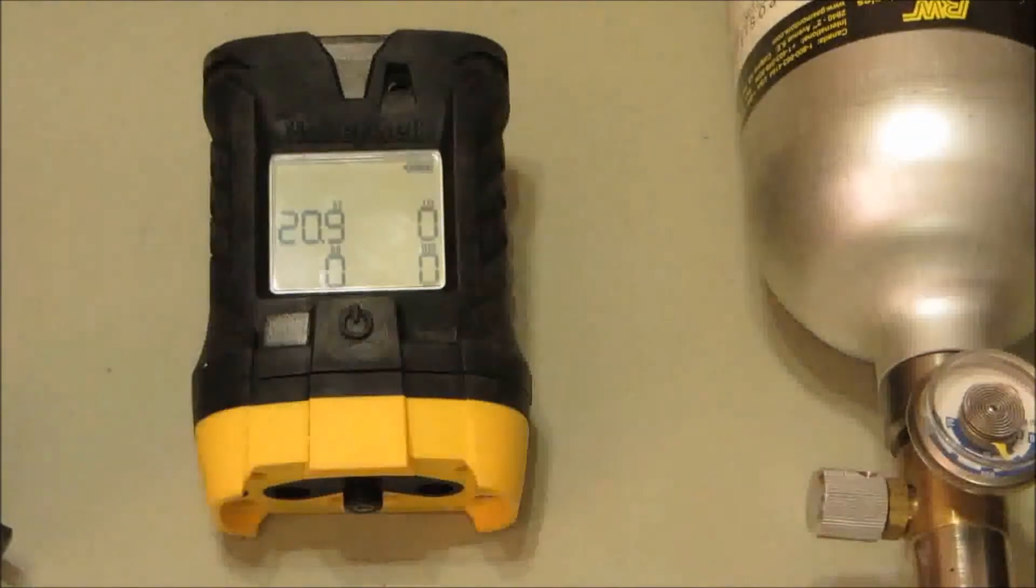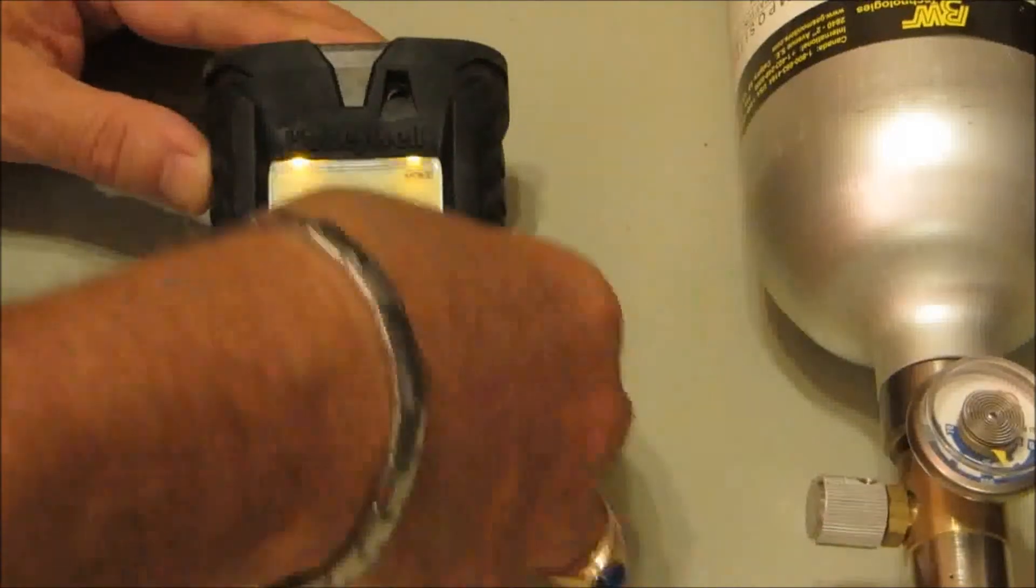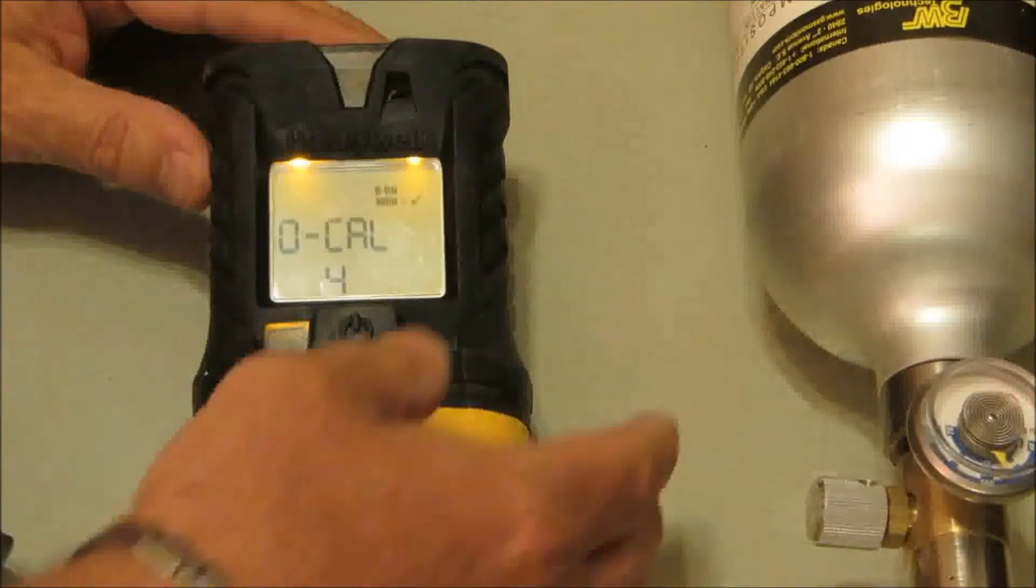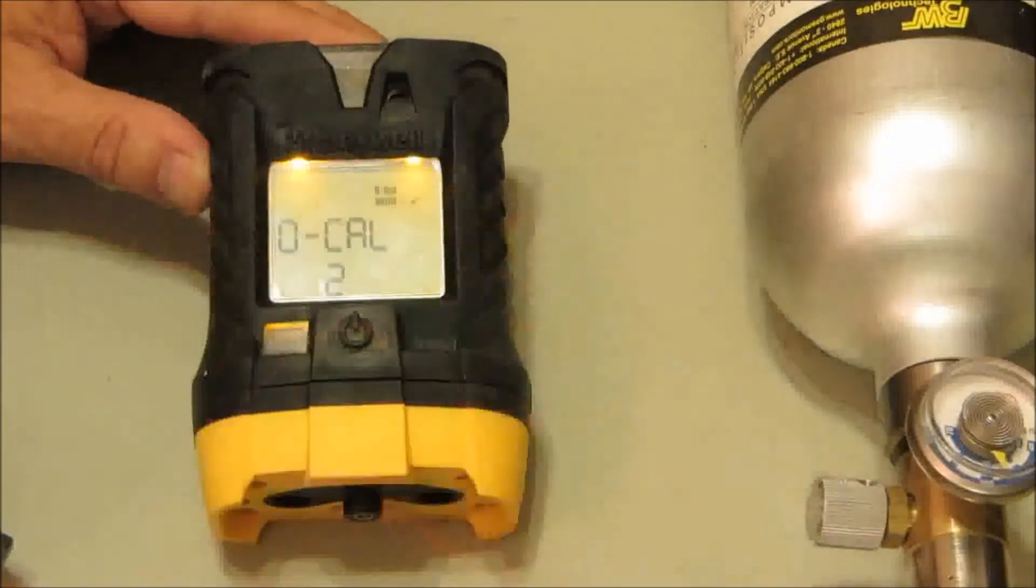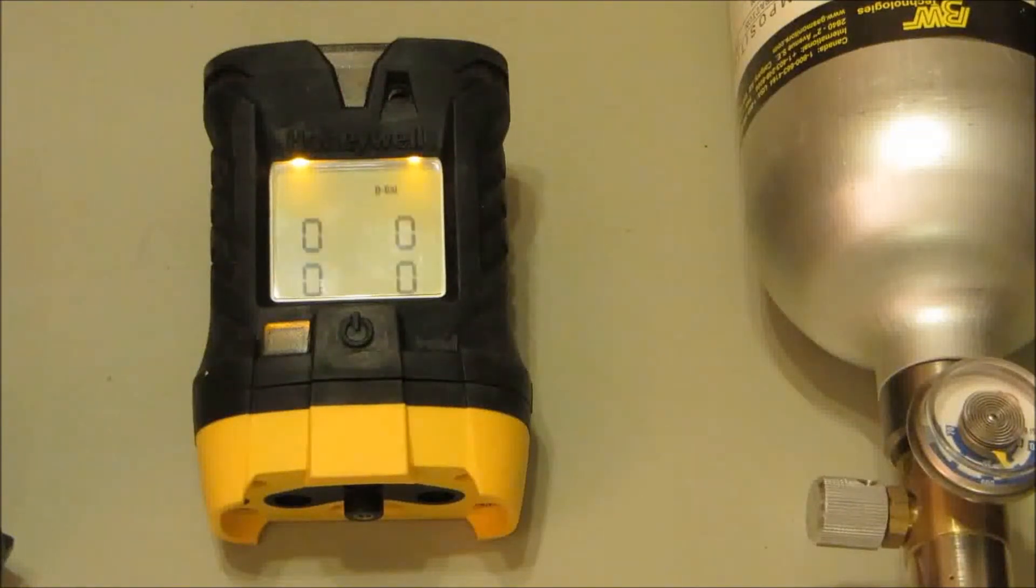Calibrating the monitor. With the monitor in the normal operating mode, triple click the mode button to enter the auto zero mode. Press again before it counts down to zero. This is where it will auto span the oxygen to 20.9 and zero out the toxics in the combustible sensor.